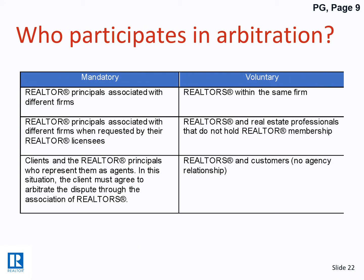Arbitration can be mandatory or voluntary. Mandatory arbitration applies to disputes between two Realtors in different offices, disputes between managing principal brokers acting on behalf of licensees, or disputes with clients. Voluntary arbitration is also available — typically for agents within the same office, Realtors who don't hold Realtor membership, or Realtors and customers with no agency relationship.